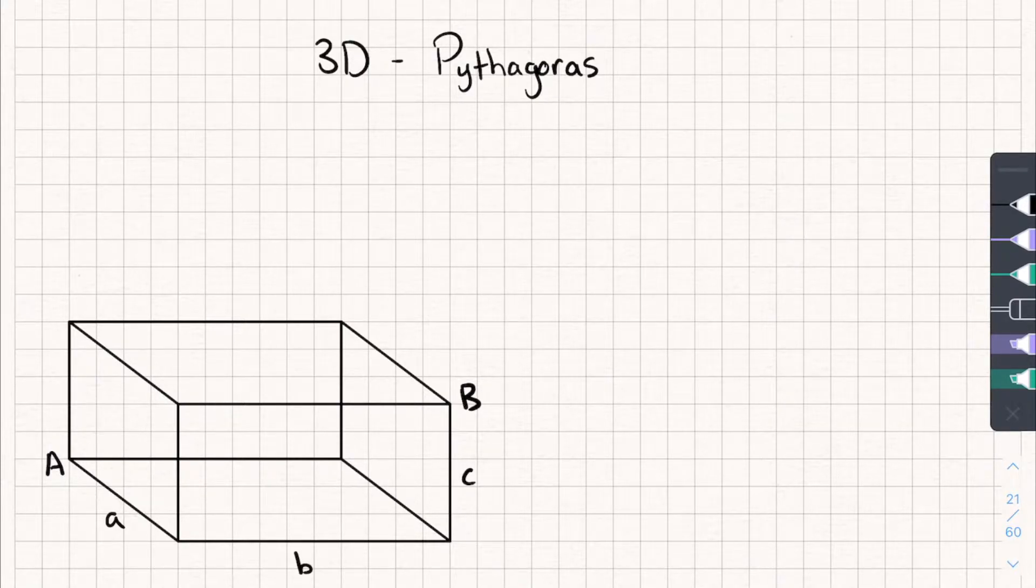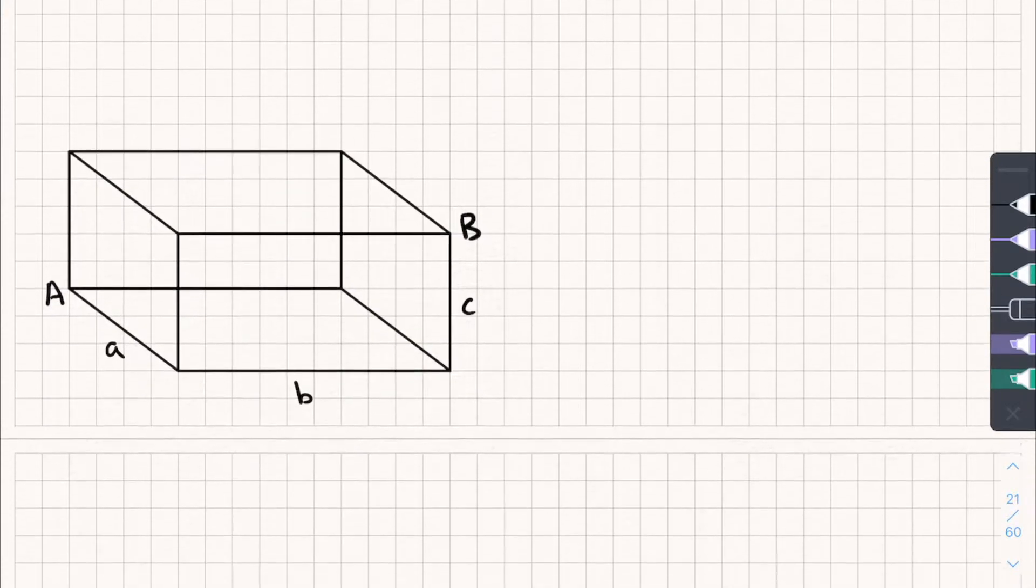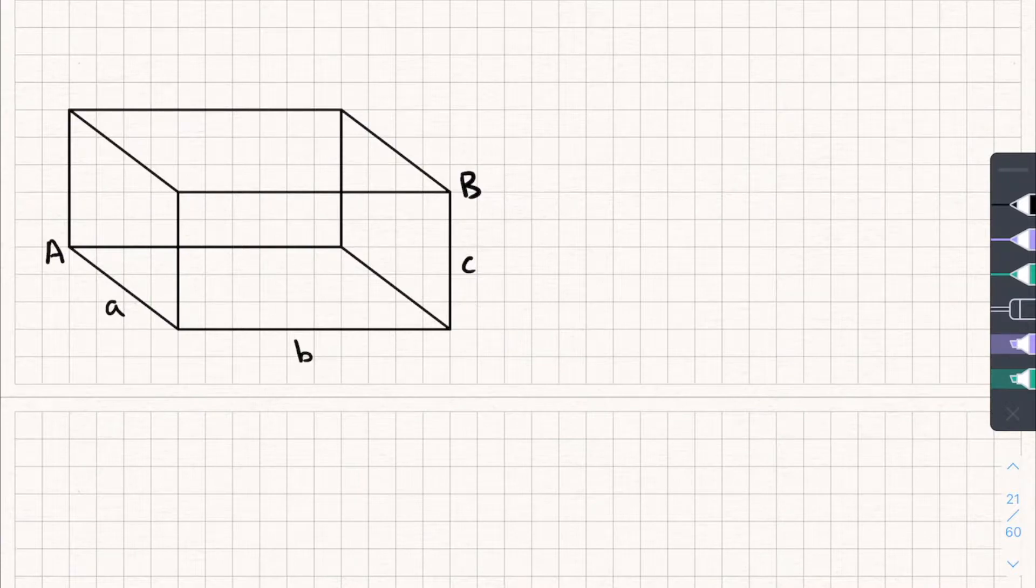So what is it? Well, it is literally Pythagoras just in three dimensions. So say we're given a shape like this, it's a cuboid, and we want to find this diagonal distance, AB. But we're only given the lengths of sides A, B and C. How could we do that? Well, this is where we can use 3D Pythagoras, and it doesn't just have to be on a cuboid, it can be other shapes too. But here's how it works.